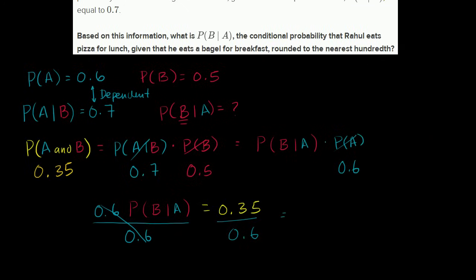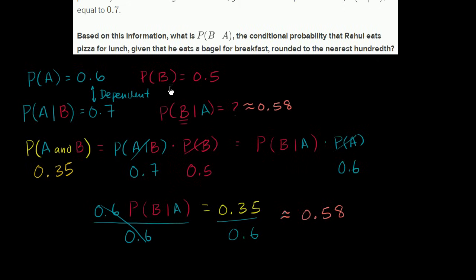So the probability of B given A is approximately 0.58. Once again, this verifies that these are dependent events. The probability that B happens given A is true (0.58) is higher than just the probability of B by itself (0.5) — meaning knowing that event A has occurred increases the likelihood of event B. And we're done.